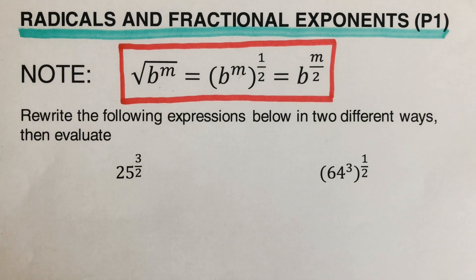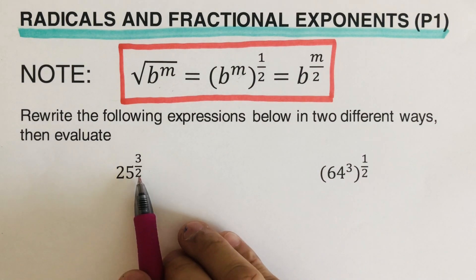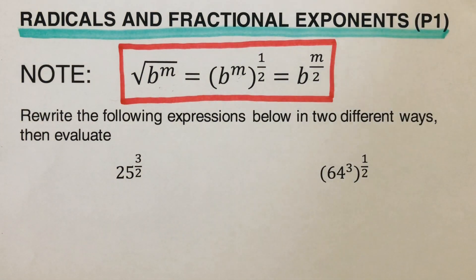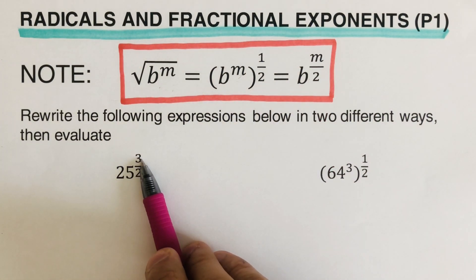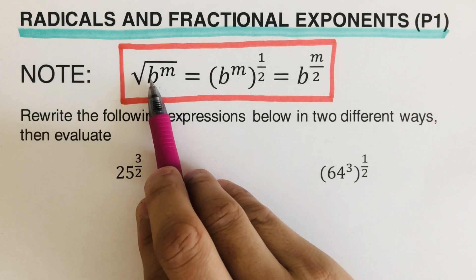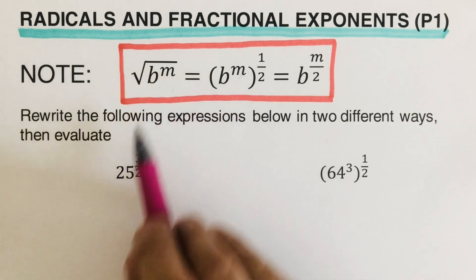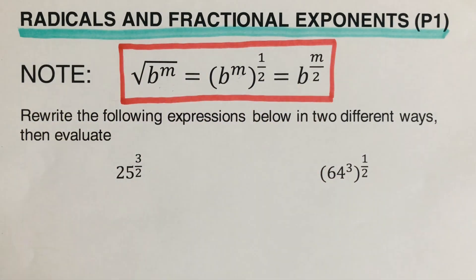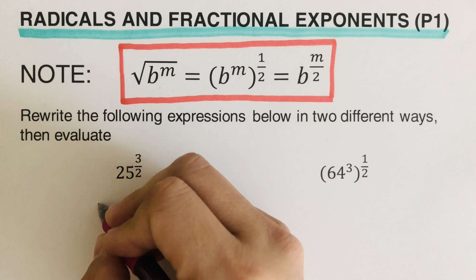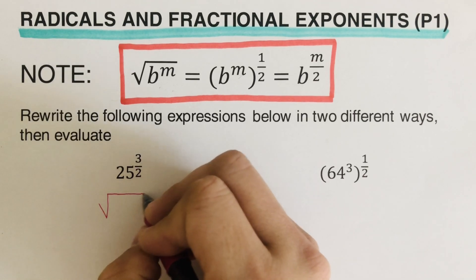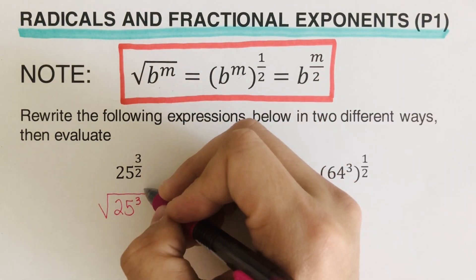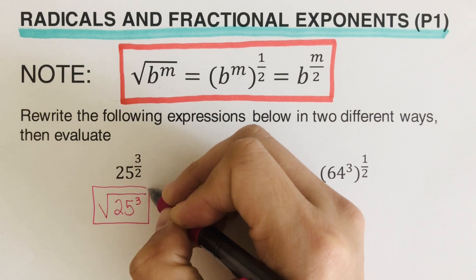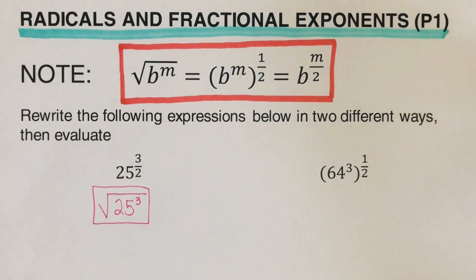For the first example, we have 25 to the power three-halves. Looking at the problem, this matches our form where m is three. We need to come up with two more equivalent expressions. The first equivalent expression is the square root of 25 to the power three.